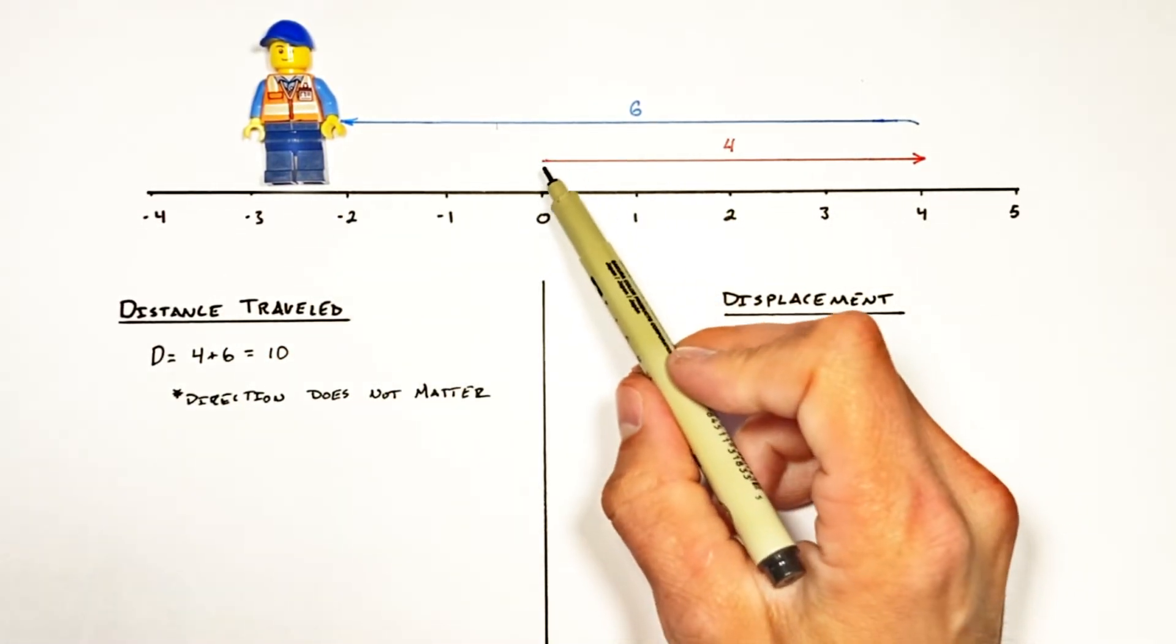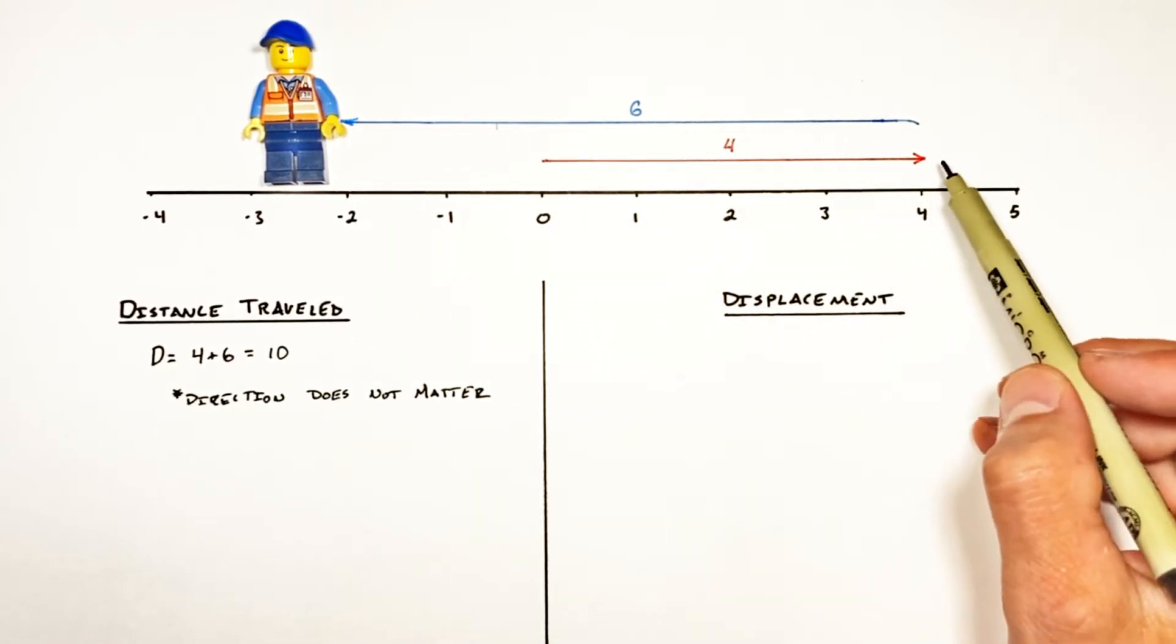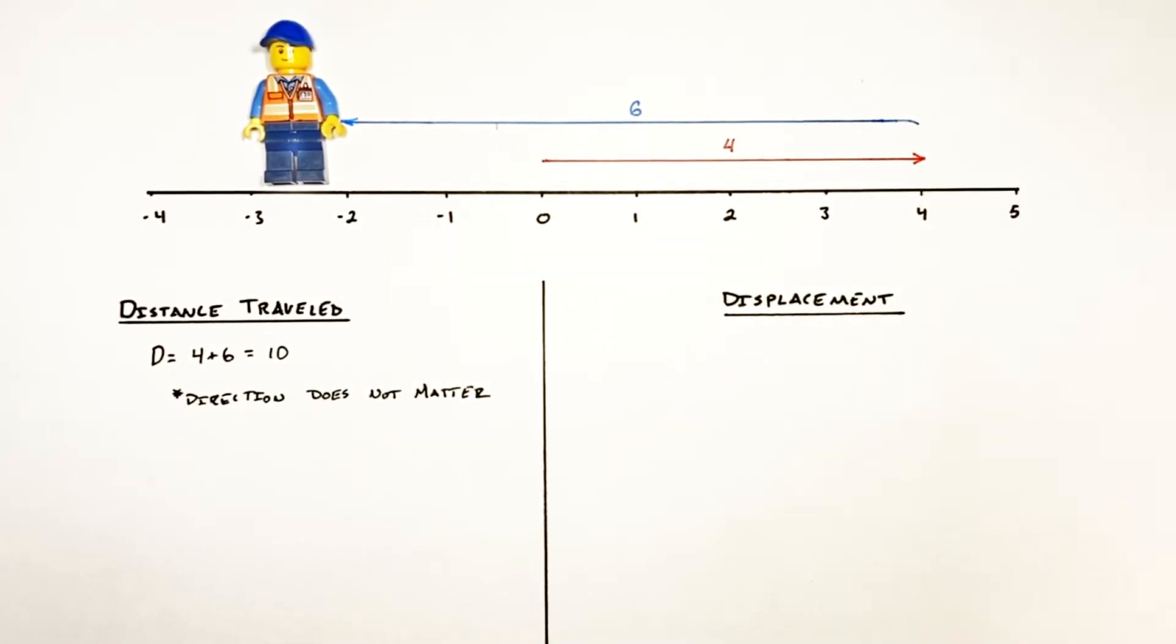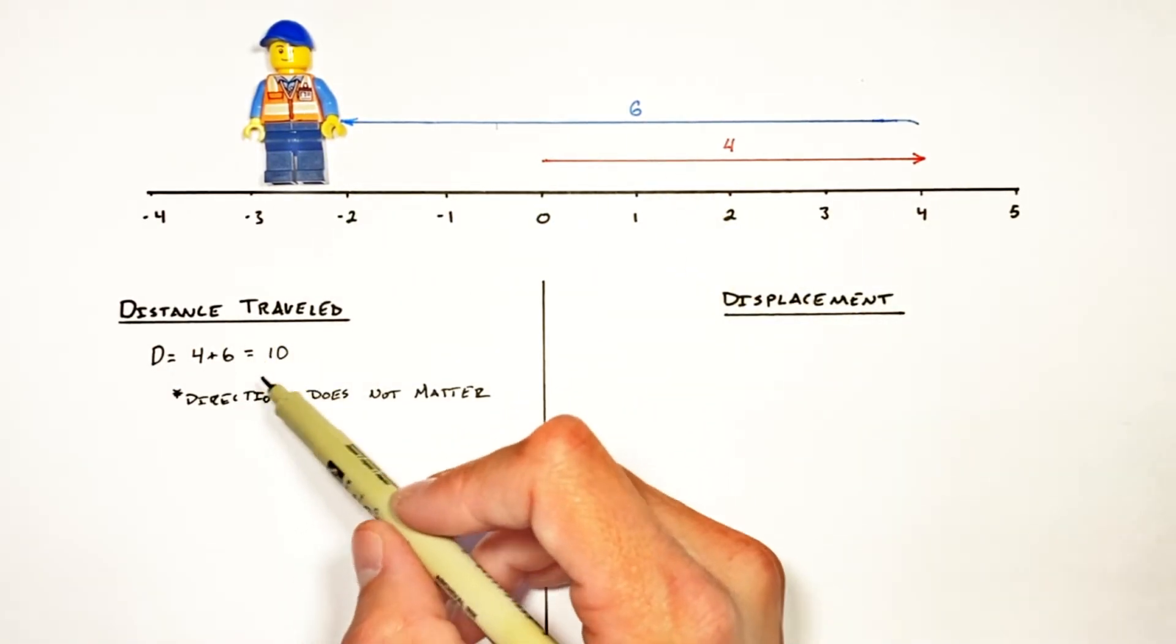I mean, if our guy had started here and gone four this way, and then another six this way, it'd be kind of a crap example. He'd be off the page, but he would have still traveled ten.